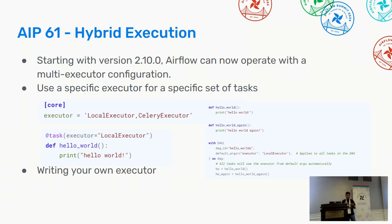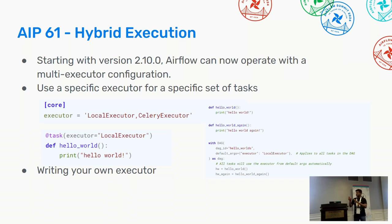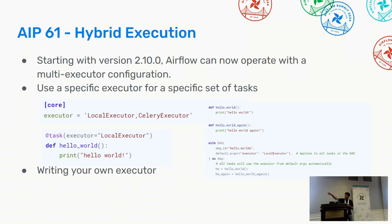You can specify executors at the task level as well as at the DAG level. Depending on the use case, you can say a specific task is more resource intensive and assign a specific executor, or a DAG is lightweight and assign accordingly. It's also possible to write your own executors and use them alongside the built-in list. You specify the executors in configuration and the first one is taken as the default.